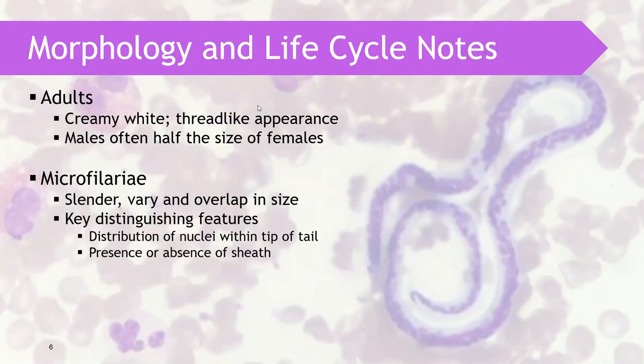Since filaria is a nematode, it has separate sexes — male and female. The adult form has a white, thread-like appearance. Sometimes it is called a threadworm, but the true threadworm is Strongyloides. In terms of size, as with other nematodes, the female is larger — the male is often half the size of the female.